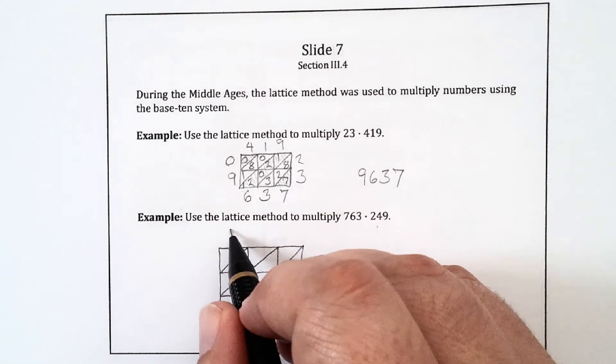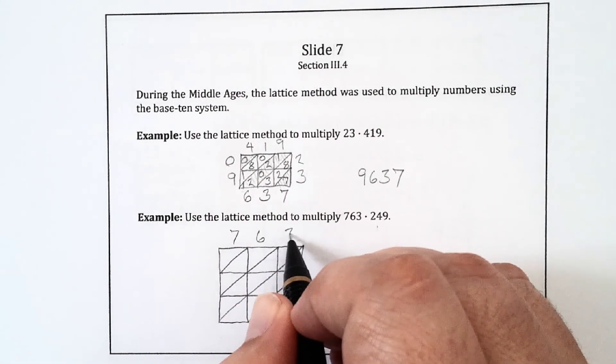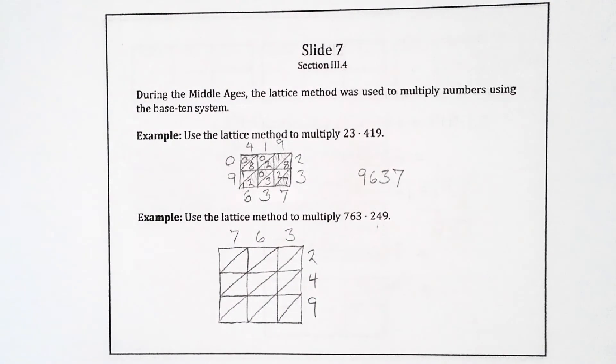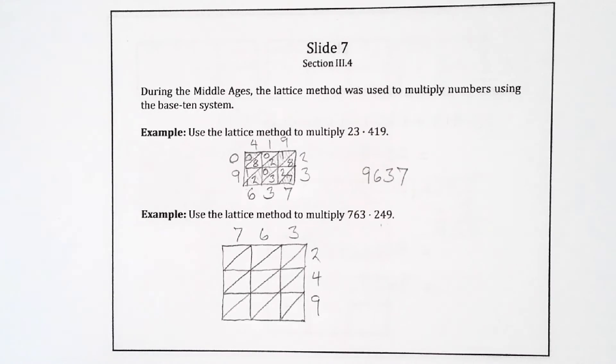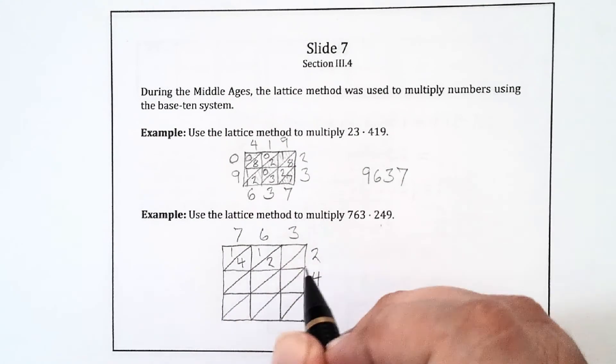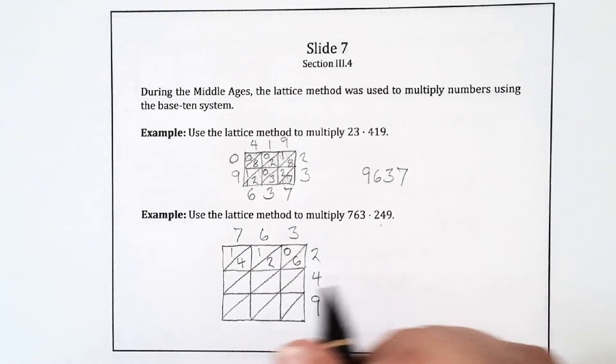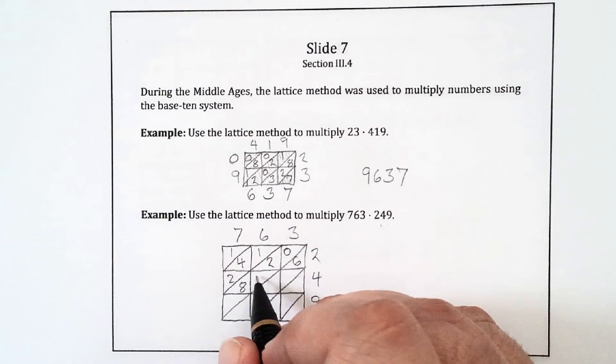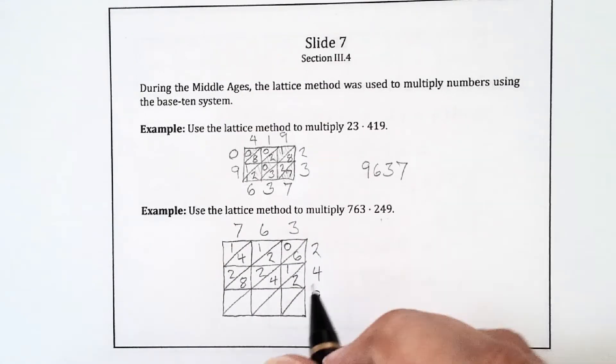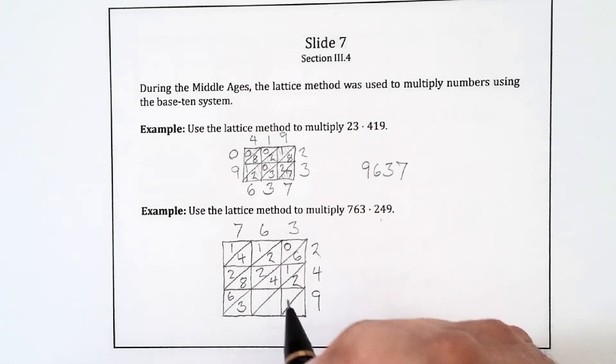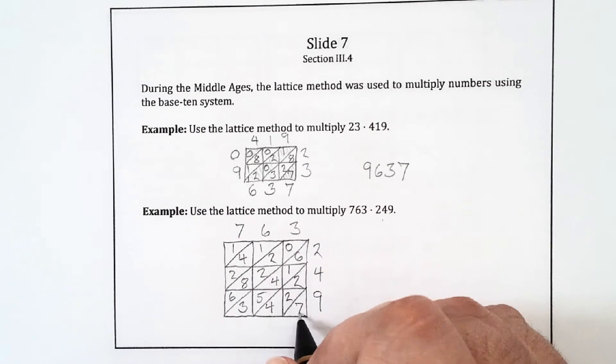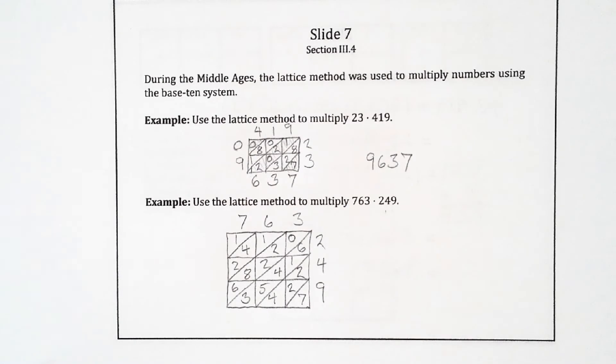So we have 763 times 249. So 7, 6, and 3 across the top, and 2, 4, and 9 down the side. And each little square, we multiply the number above and to the right. We have 14, 12, 6, 28, 24, 12, 63, 54, and 27. So that gets the box filled in.